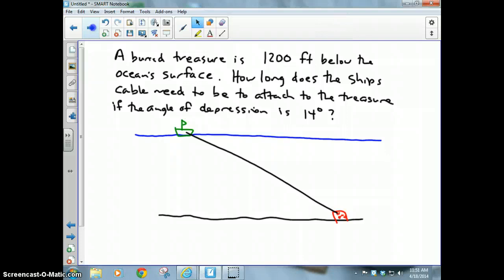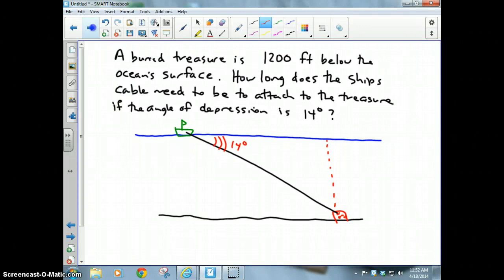And there you go, you can see our triangle forming right there, upside down triangle. Well here's the angle of depression, that's 14 degrees, and the buried treasure is 1200 feet below the surface of the water. I need to figure out x, how long my black cable line is. Well if I'm standing where the boat is at 14 degrees, this would be opposite and here's my 90 degree angle, this would be hypotenuse. Therefore opposite and hypotenuse is sine.